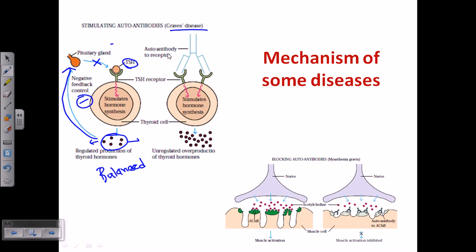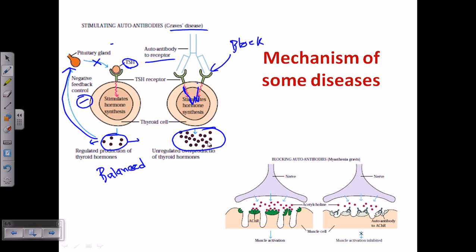In Graves' disease, autoantibodies mimic the structure of TSH and bind to the TSH receptor, blocking it. They still provide intracellular signaling, telling the thyroid cell to secrete large amounts of thyroid hormone. However, because no actual TSH is present, the negative feedback is blocked. As a result, thyroid hormone synthesis continues uncontrolled, increasing thyroid hormone concentration and causing hyperthyroidism.